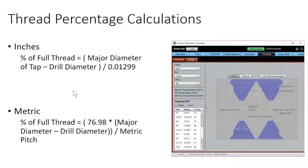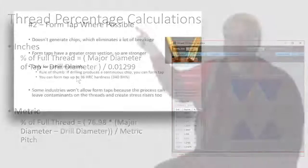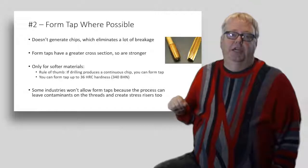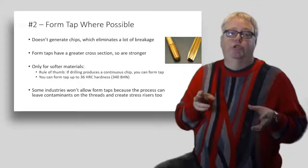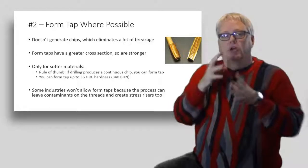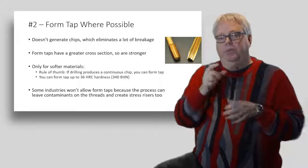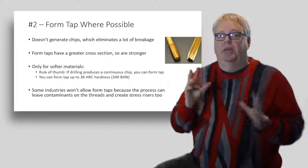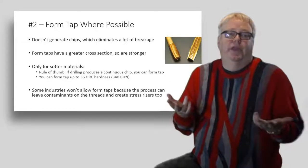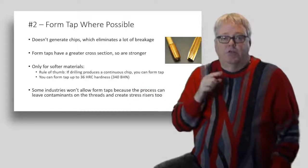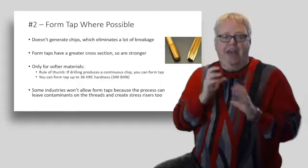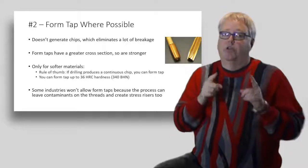My second suggestion is use form taps whenever you can. Form taps don't generate any chips. They push the material into shape, cold forming your threads. The most common reason taps break is they get bound up in their own chips, and this can't happen with a form tap. They don't make any chips. So form taps also have a greater cross section, so the taps themselves are stronger than cutting taps.